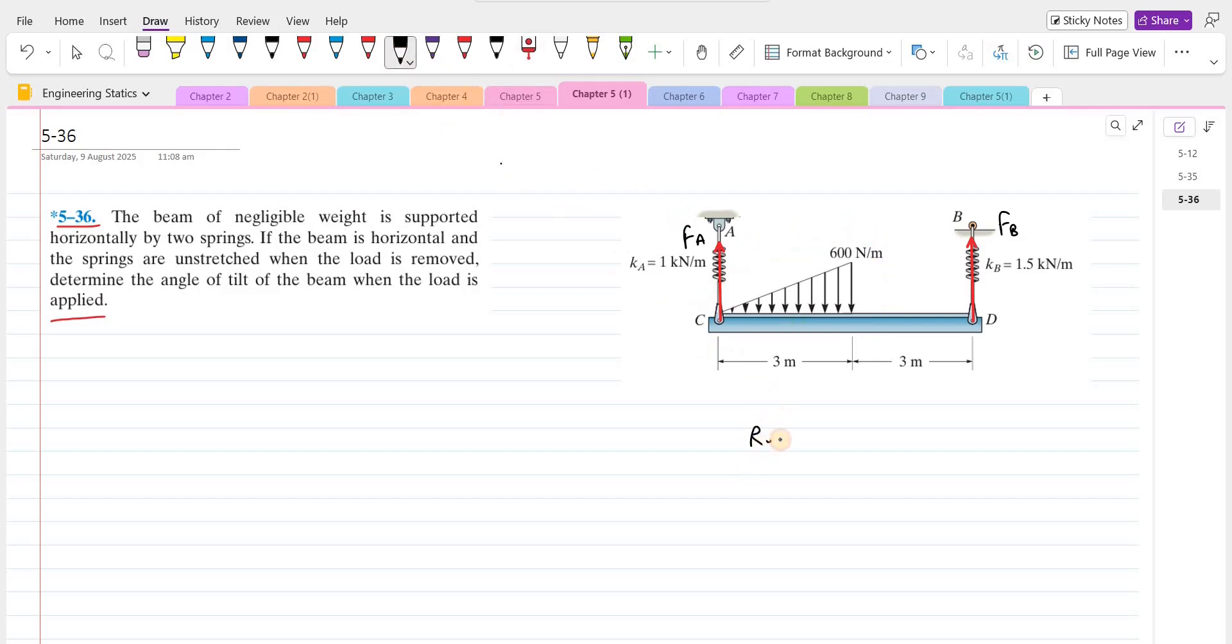So for the resultant of triangular distributed loading, we have to find the area of this distributed loading. Let's call this FR. So it is 1 upon 2 the base, which is 3 meters, into the height, which is 600. So the magnitude of the resultant force is 900 Newtons.